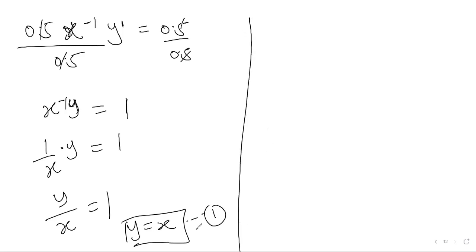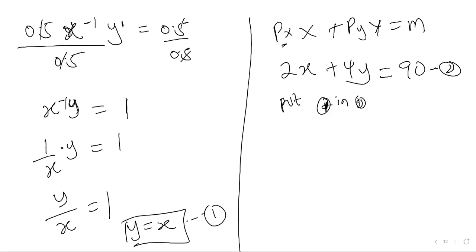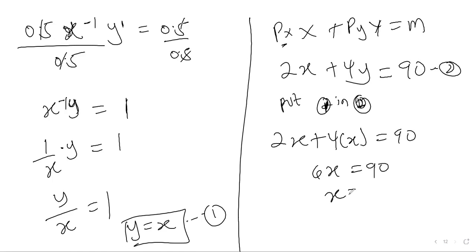The sufficient condition is that you have to substitute into the budget line. The budget line is Px times x plus Py times y equals m, so 2x plus 4y equals 90. We name this equation 2. Since y equals x from equation 1, we substitute into equation 2: everywhere we see y we put x. So we have 2x plus 4x equals 90, giving 6x equals 90, so x equals 15.